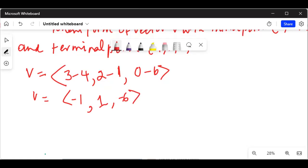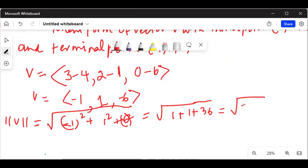Now let's calculate the magnitude of vector V. That will be equal to minus 1 squared plus 1 squared plus minus 6 squared, which equals 1 plus 1 plus 36, which equals square root of 38. That is the magnitude of vector V.